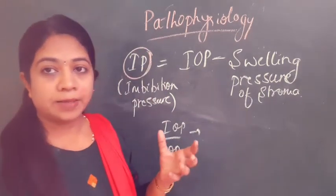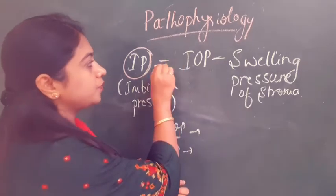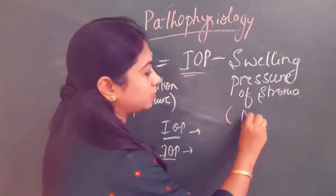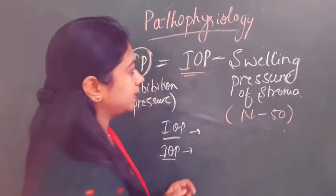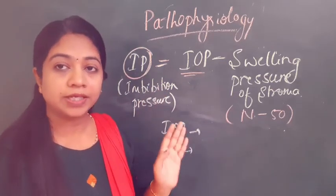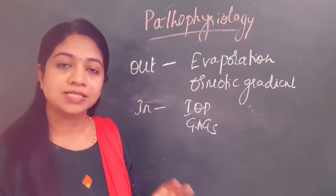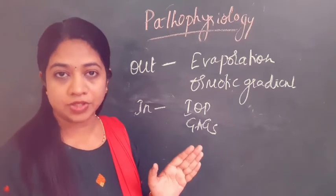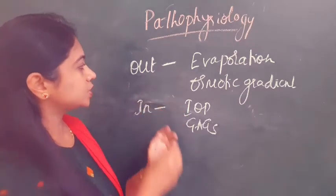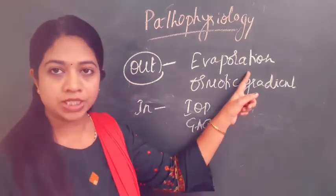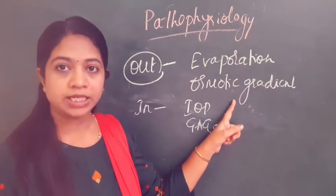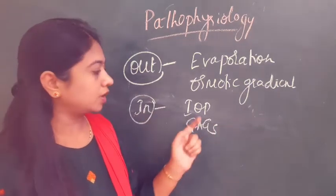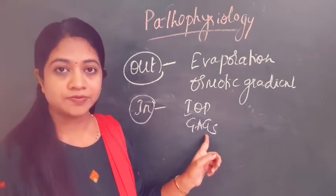There is a formula here: imbibition pressure — the capacity of the cornea to imbibe fluid — equals intraocular pressure minus the swelling pressure of the corneal stroma. Normally the swelling pressure of the stroma is around 50 mmHg, so if IOP crosses more than 50 it will invariably lead to corneal edema. To summarize: the barrier function of epithelium and endothelium, the osmotic gradient of the tear film and aqueous humor prevent hydration, while IOP and stromal glycosaminoglycans draw fluid into the cornea.